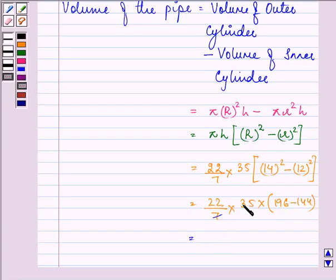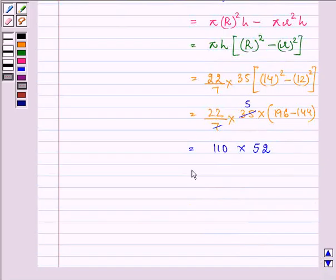Further, we have 110 into 196 minus 144 will be equal to 52. So we have 5720 cm cube.